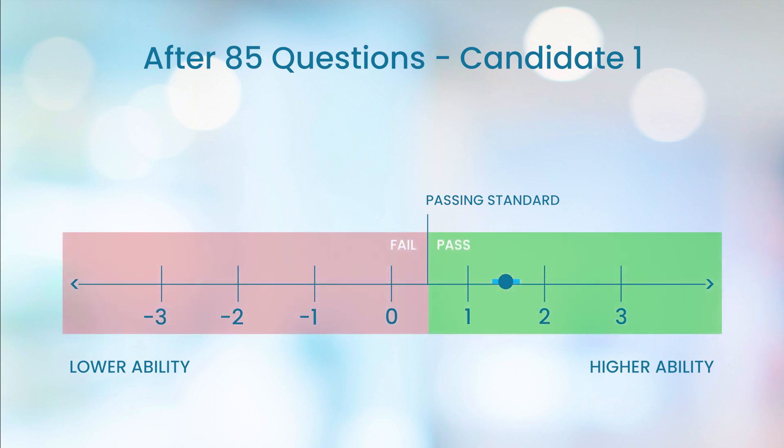We can see from the graph that our candidate's ability estimate, even accounting for any uncertainty, is clearly above 0.5. The candidate would therefore pass the exam with what is known as a minimum length pass. 85 questions is the earliest a pass result can be determined.